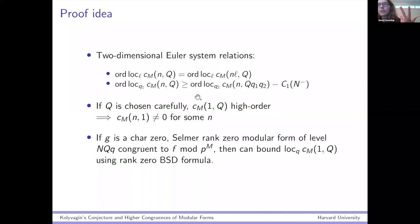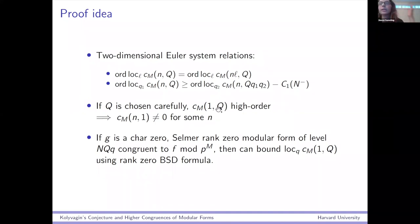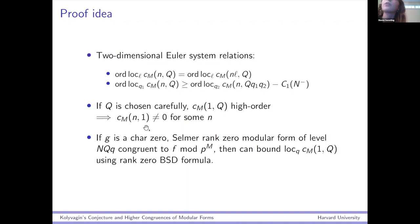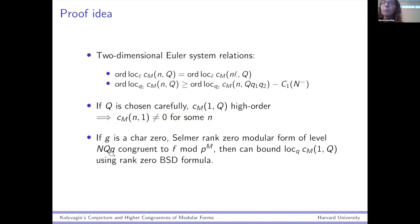There's some sort of downwards process where if CM(1,Q) is really high order and you've chosen Q well enough, then you'll get that CM(N,1) is non-zero for some N. We needed to control CM(1,Q). If G is a characteristic zero form of rank zero modular form of level NQ·q — with this congruence — then you can bound the localization at little q of CM(1,Q) using the rank zero BSD.